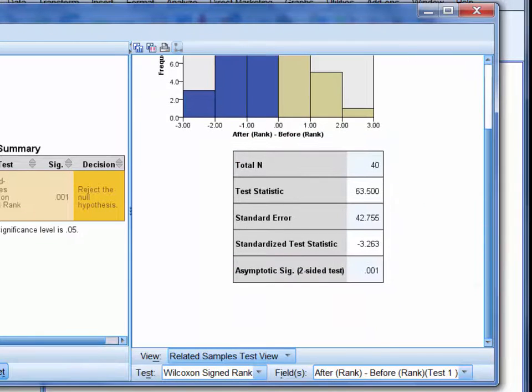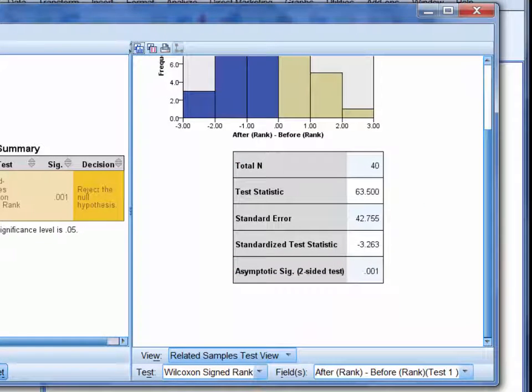In the table below, we have the information that we need for the write-up. Most specifically, we've got the test statistic, which we usually denote with an italicized capital T. The standardized test statistic, which is represented with an italicized lowercase z, and the significance level, which is 0.001.